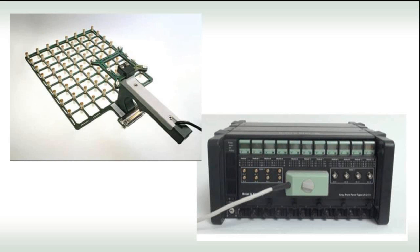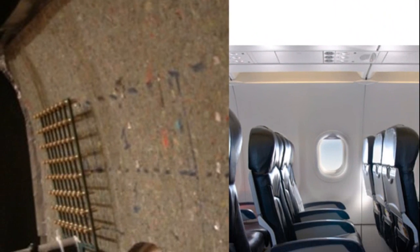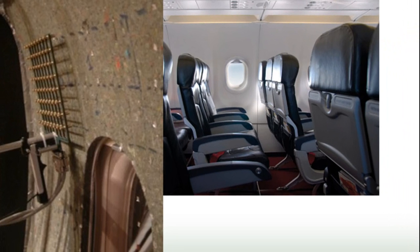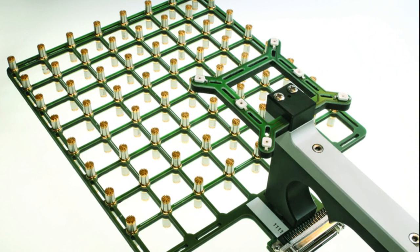Handheld microphone arrays can be used close to the surfaces inside the cabin to determine absorption, entering intensity, and transmission loss. An important requirement for measurements in aircraft is that the system must be easy to install and easy to use.